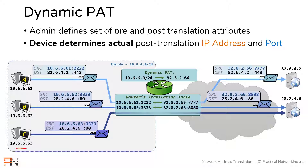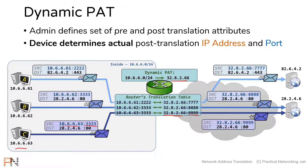Host C, in this example, sends out a packet from its own IP address and randomly selects source port 3333. When that packet hits the router, the router translates it to the shared IP address according to the configuration, and picks a new source port of 9999. On the other side of the translation, that's what the packet would look like.